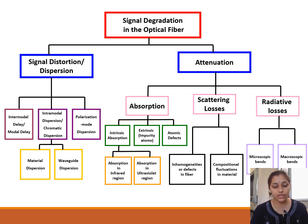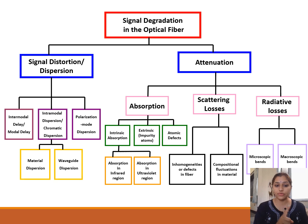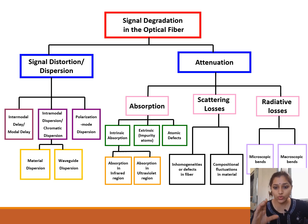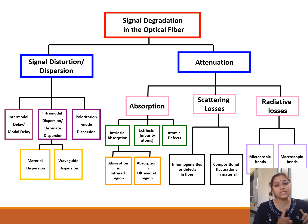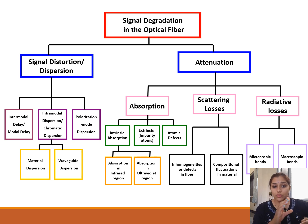Signal degradation in optical fibers occurs because of two important reasons: first, dispersion, and second, attenuation. The basic difference is that attenuation reduces the amplitude of the signal, whereas dispersion reduces amplitude as well as broadens the pulses. In optical fiber communication we send information over optical signals, so dispersion broadens those modes.